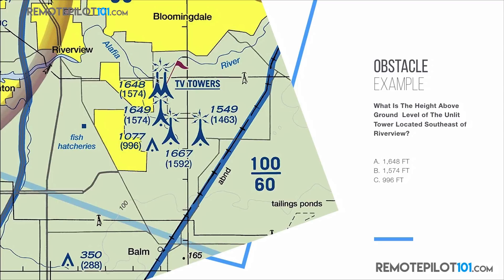So let's look. We can tell these towers here have lights because they have little lightning bolts coming off them — that's the symbol meaning this is a lit tower. The only unlit tower is this tower right here. It's at 1,077 feet MSL, height above mean sea level, or 996 feet AGL. C is our answer in this case. MSL and AGL — don't be confused.